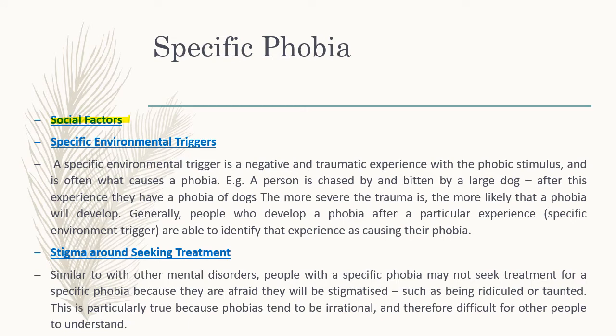The social factors include specific environmental triggers — a negative or traumatic experience with a phobic stimulus. For example, being chased or bitten by a large dog, or bitten by a spider. The more severe the trauma, the more likely a phobia will develop. The more pain experienced, the more likely you are to fear it. Generally, people who develop a phobia after a particular experience are able to identify that experience as causing their phobia — they can pinpoint exactly when they started to fear that thing.